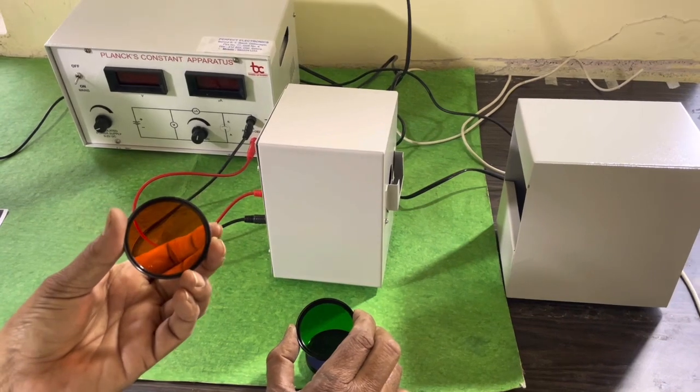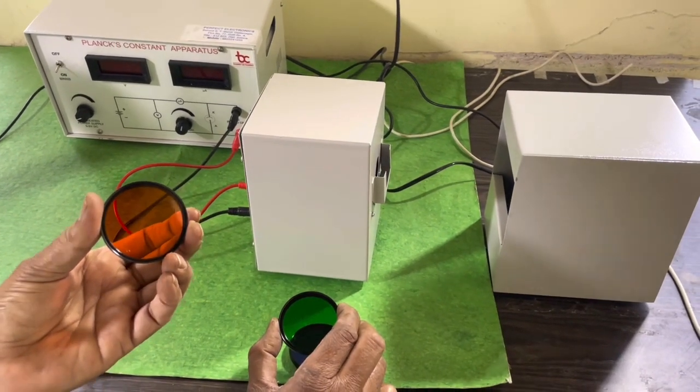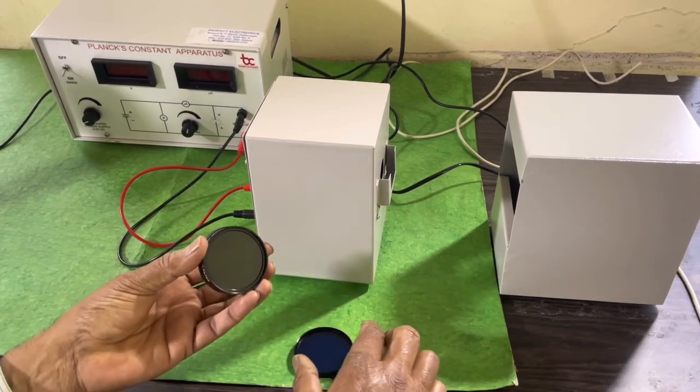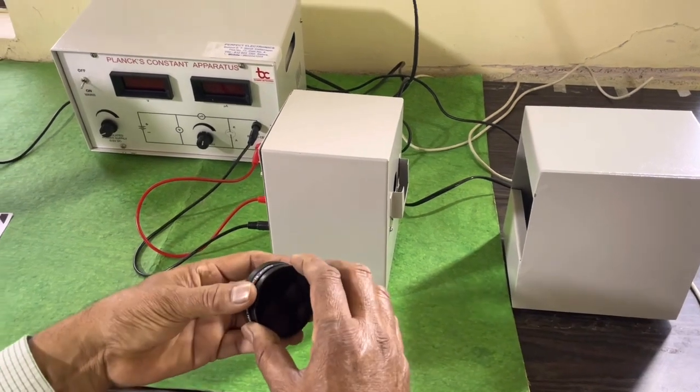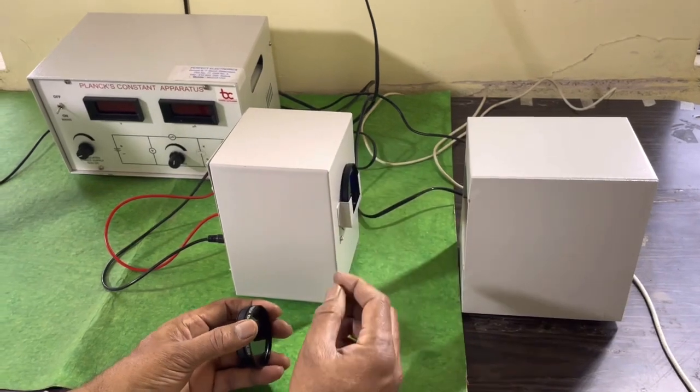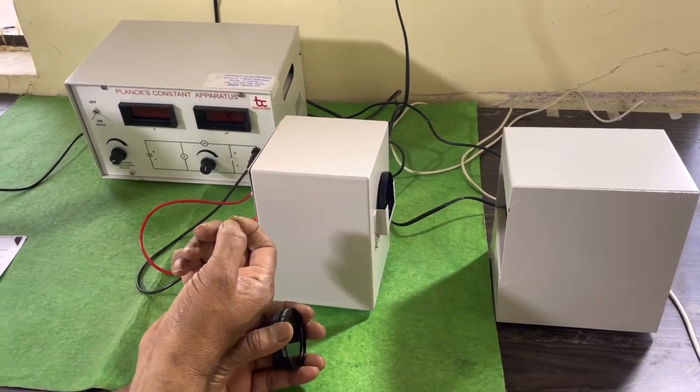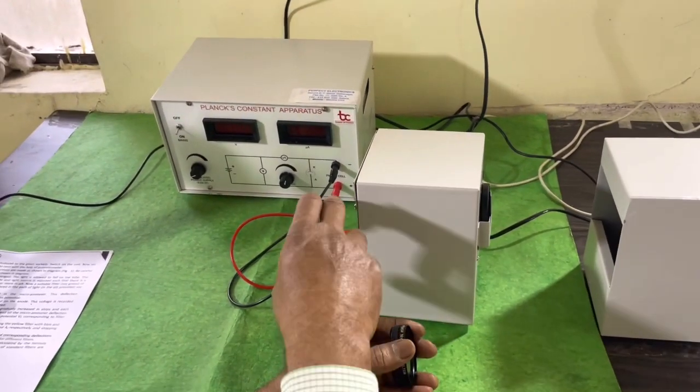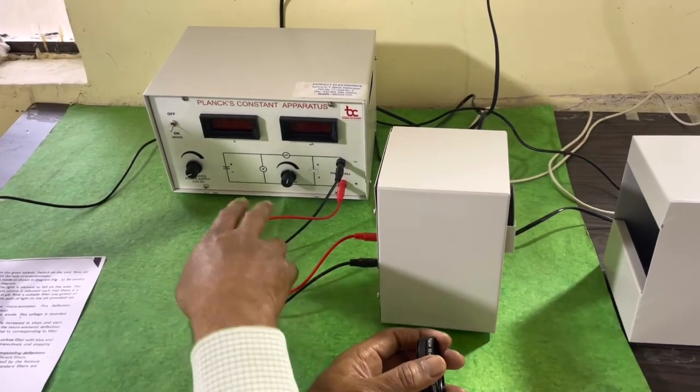The third filter is orange filter whose wavelength is 5500 × 10⁻¹⁰ meters. These filters, one by one, we have to use here. The filter is kept here and corresponding light will be incident on the photocell and current due to the photocell is produced in the meter.